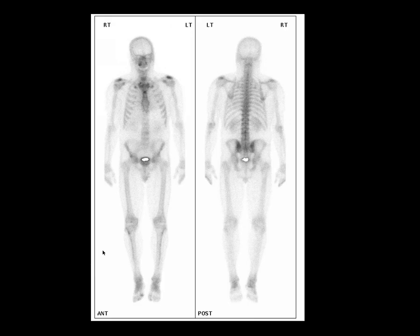Let's first point out a few sites of normal uptake. It's quite common to get a little bit of increased activity in the anterior aspect of the first ribs, as these areas are quite close to the gamma camera. You can also see quite prominent uptake in the sternoclavicular joints as a normal finding, providing they're symmetrical. The coracoid process and prominent but symmetrical acromioclavicular joint activity are also normal.